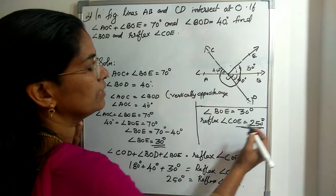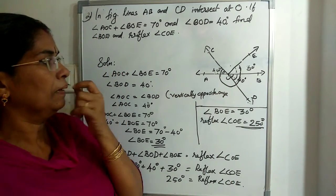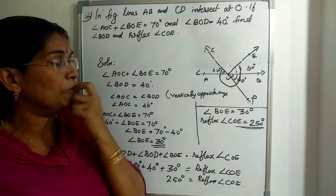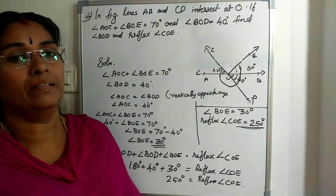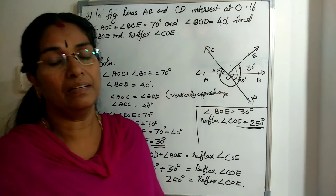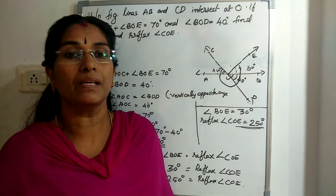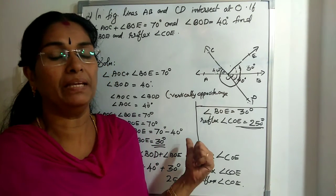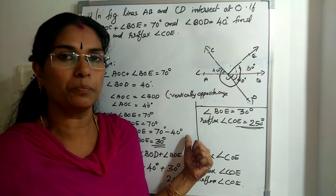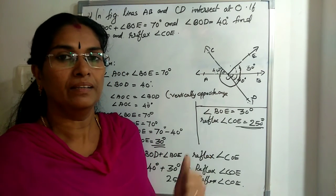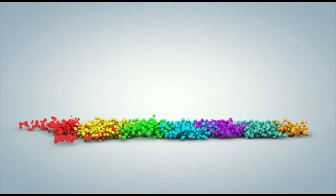These problems are very simple. You just need to apply the axioms and theorems we have learned — the linear pair axiom and the vertically opposite angles theorem — to solve all these problems.